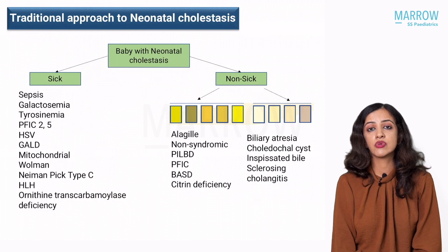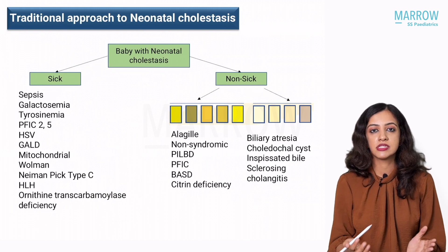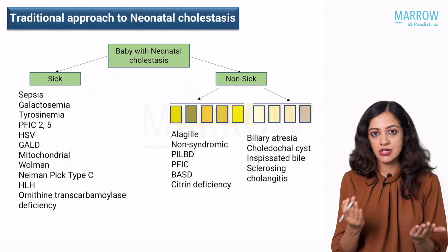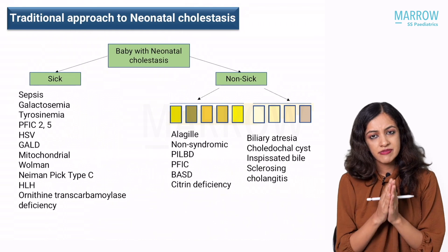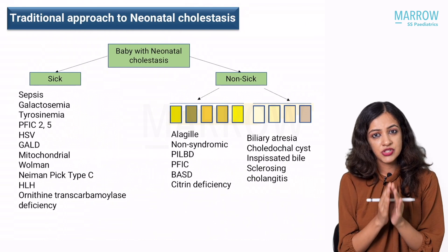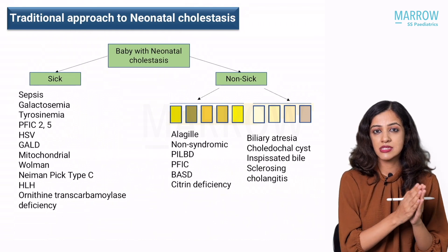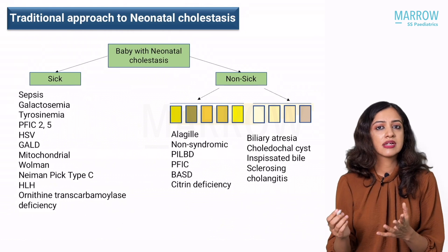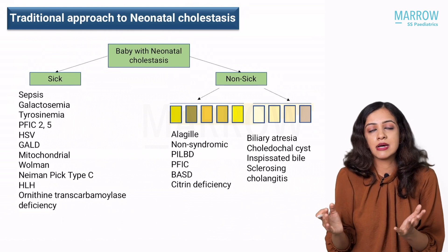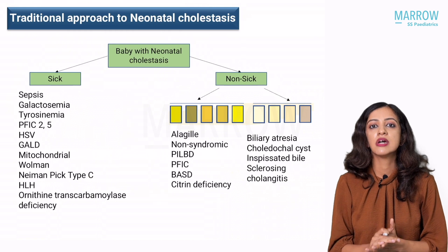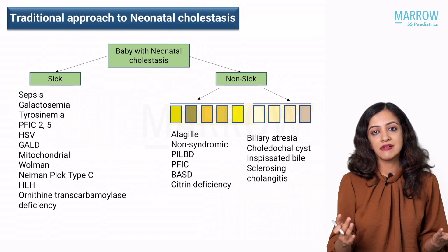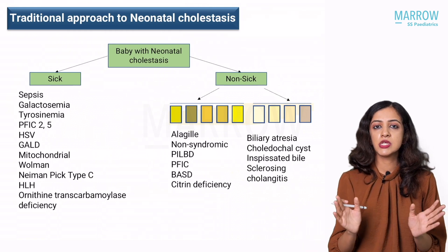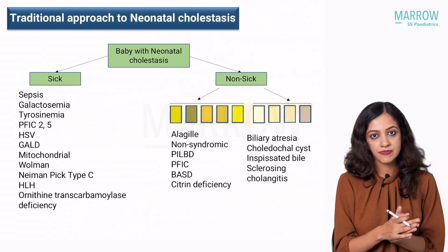It is not just enough to know the etiologies because it is a big list. So how do you know which tests to be done in a given baby? We will try to classify these babies as sick and non-sick. Non-sick — the typical example is a baby with biliary atresia. The baby is otherwise happy, growing well, gaining weight. Everything is okay except for the cholestasis.